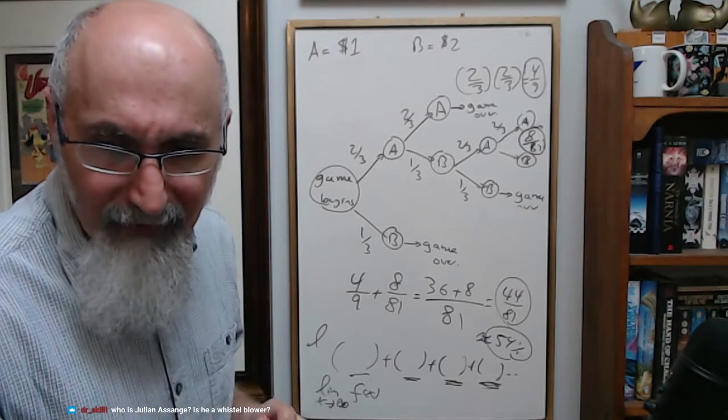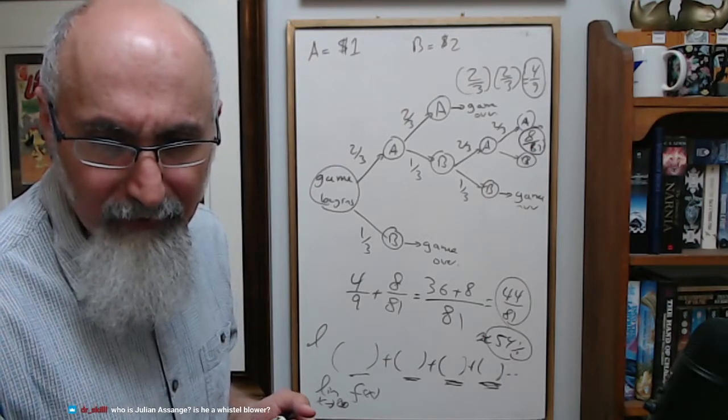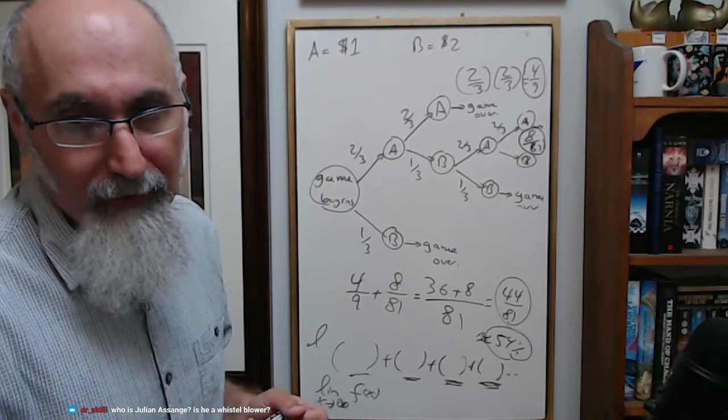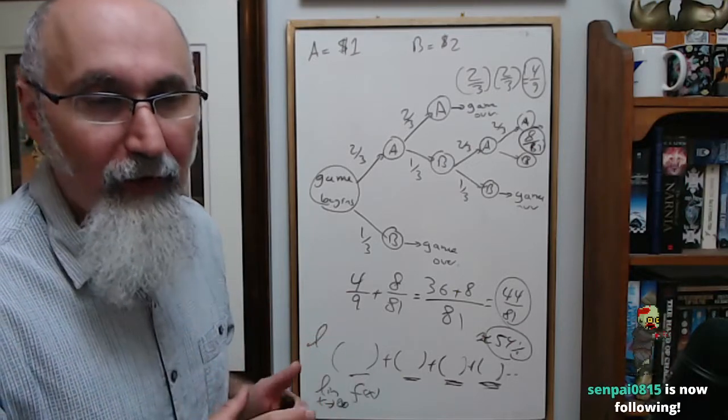Looks like 4 times (n minus 1) over 3 to the power of n, for n equals 2, 3. Who is Julian Assange? Is he a whistleblower? He is a journalist and a publisher.